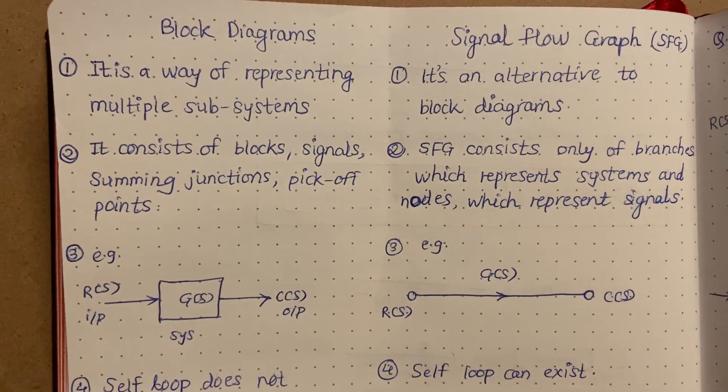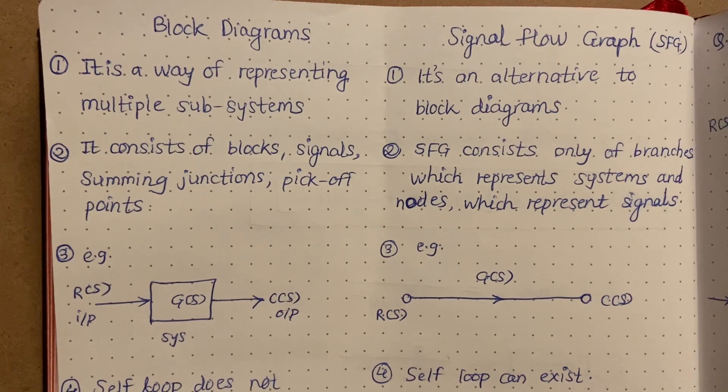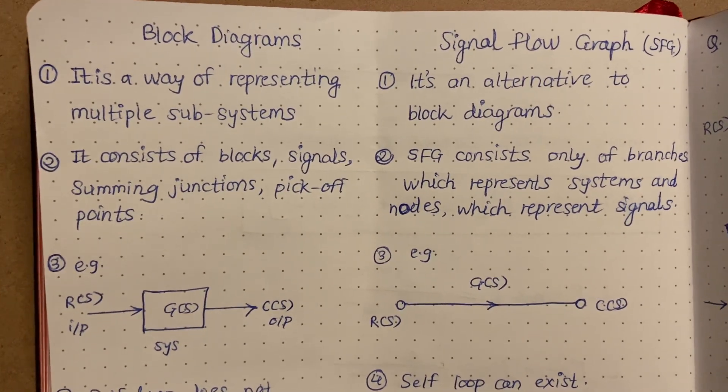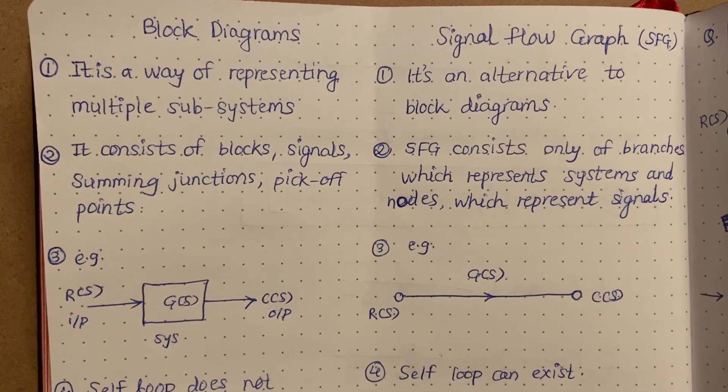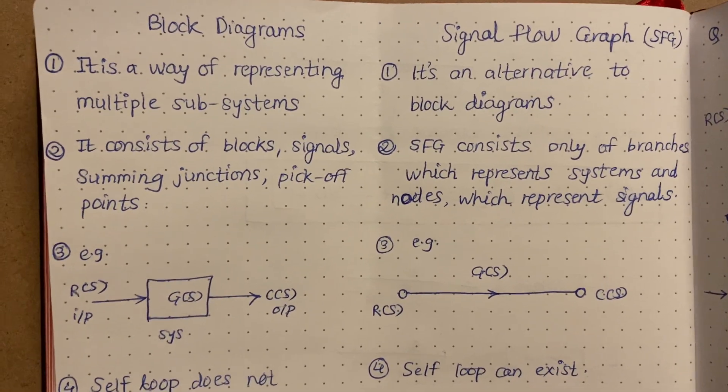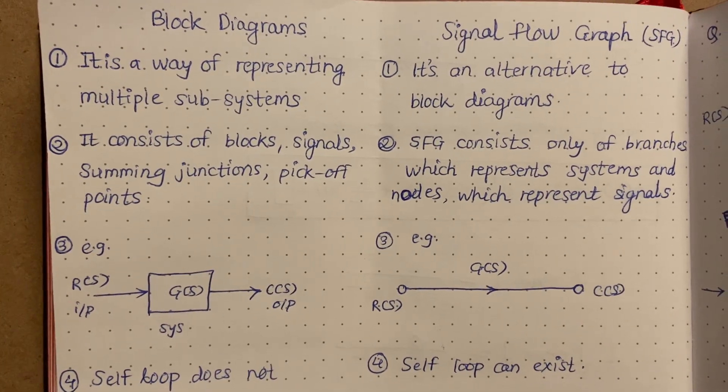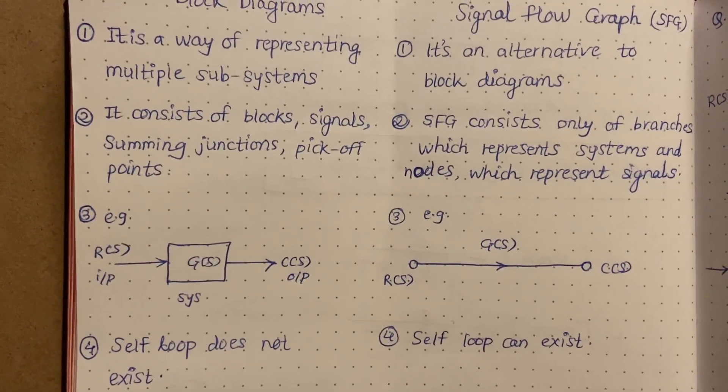What does block diagram include? Block diagram consists of blocks, signals, summing junctions, and pick-off points. How about signal flow graphs? Signal flow graphs consist only of branches which represent systems, and nodes which represent signals. What is the third difference?